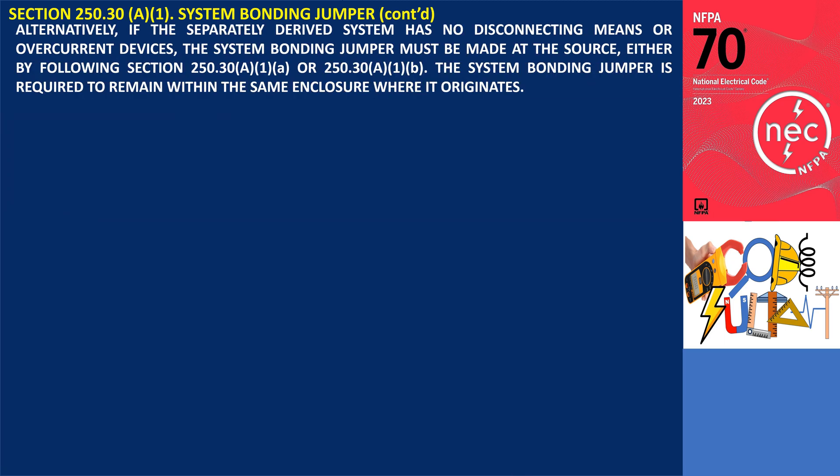Alternatively, if the separately derived system has no disconnecting means or overcurrent devices, the system bonding jumper must be made at the source, by either section 250.30 A.1.A or 250.30 A.1.B.